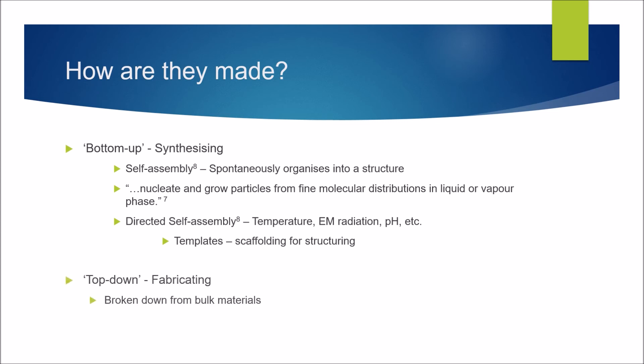The second way of making nanoparticles is top-down or fabricating, and this is a lot simpler if you're just breaking it down from bulk materials, so you're grinding it up, just cutting it up into as small as you want. This is obviously a lot cheaper to do, it's a lot easier to do. This is useful for when you're not looking for a specific structure and just want the size.